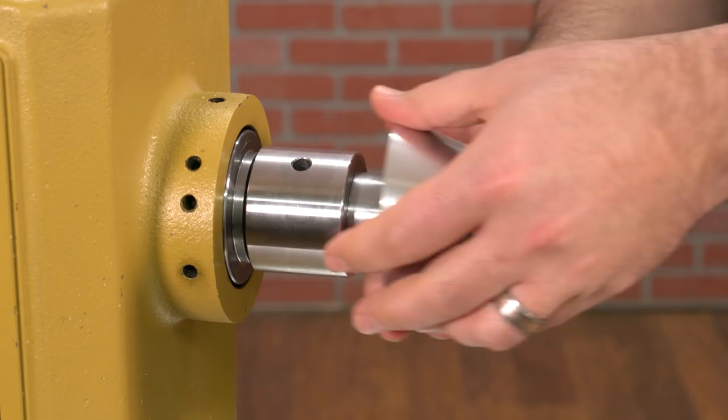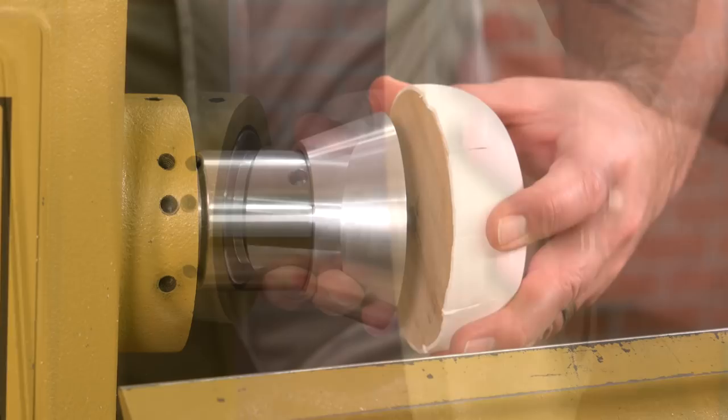Being able to remove or remount work repeatedly without losing center makes this chuck very helpful, especially when using jam chucks and turn fixtures.